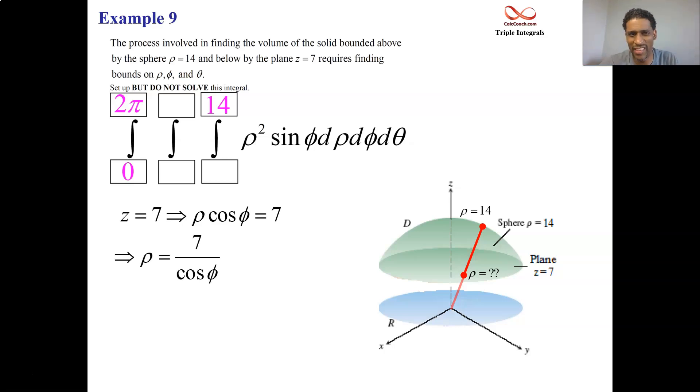And you end up with, looks a little strange. Let's make it a little better. What's the reciprocal of cosine phi? Secant phi. So 7 secant phi is the lower bound on rho. That is the name of the plane in terms of rho and phi. All right, great.